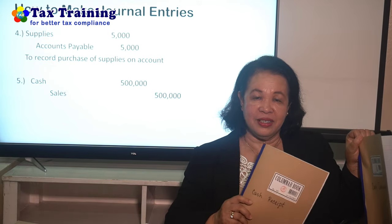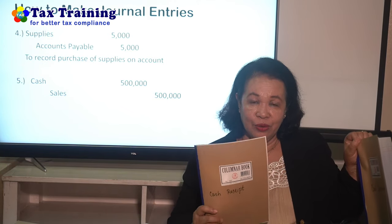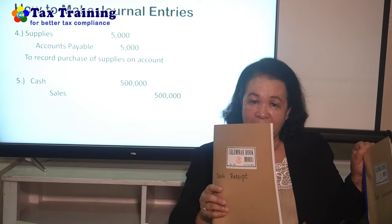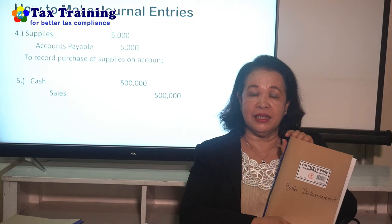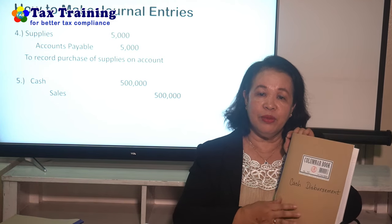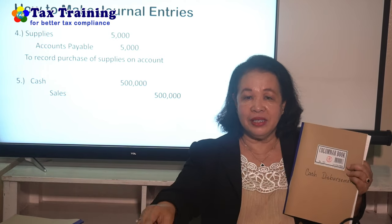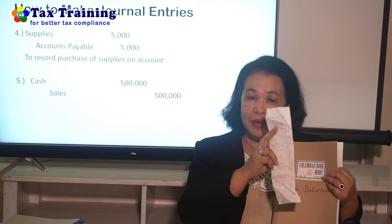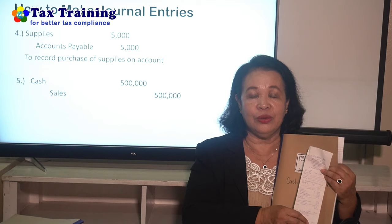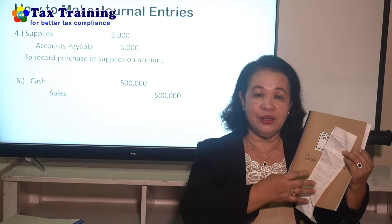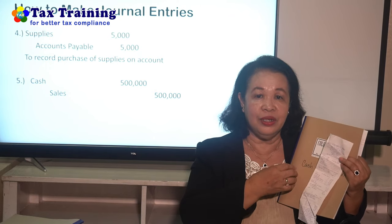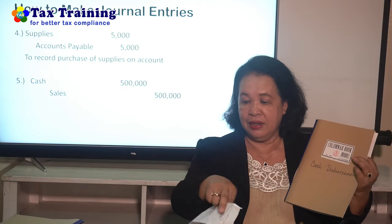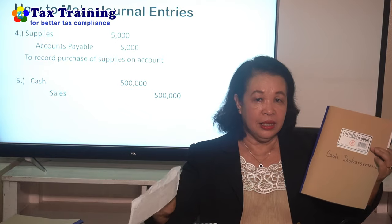There must be a corresponding receipt. For cash receipts, the receipt we issue is either an official receipt or a sales invoice. Since I sell goods, my receipt in cash receipts is my sales invoice. For cash disbursements, the receipts are those we receive from our suppliers — such as cash register machine receipts. Make sure the cash register receipts are official; we have an episode on how to detect fake receipts. If a receipt is fake, it does not meet legal requirements and cannot be used to support a business transaction. Ensure the receipts you record in your books are official.